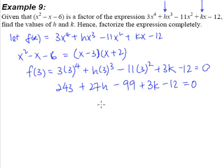So simplifying this, we will end up with 27h plus 3k is equal to negative 132. So this shall be our first equation.